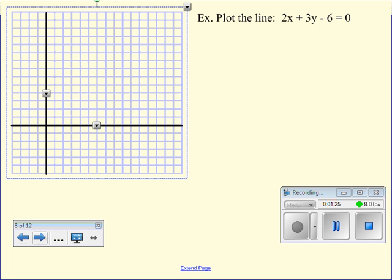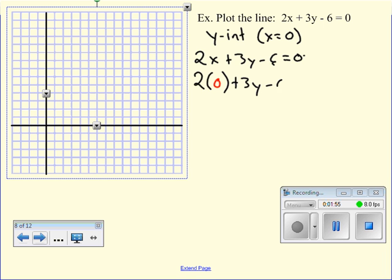I want to plot the line 2x plus 3y minus 6 equals zero. So the first thing I have to do is figure out the intercepts. For my y-intercept, x is going to be equal to zero. So I take the equation 2x plus 3y minus 6 equals zero, and I substitute zero in for x right here. So 2, and I put it in red so you see it. That's now zero. Plus 3y minus 6 equals zero.